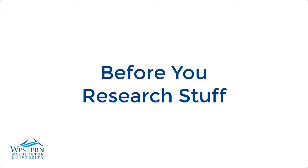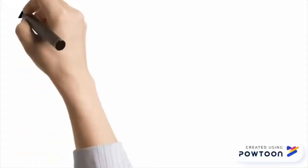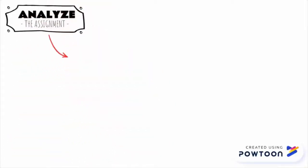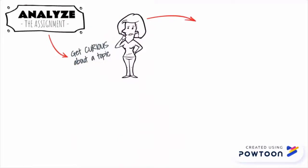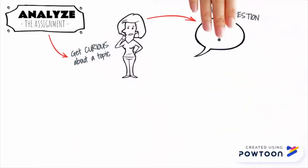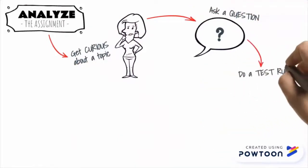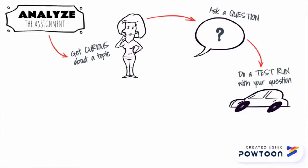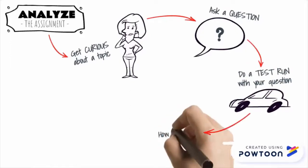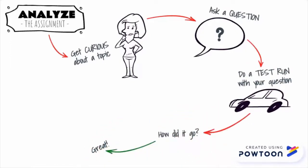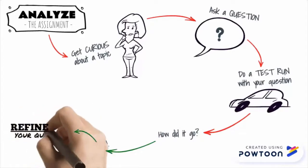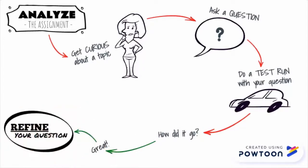The way this looks in the early stages is that you will have analyzed an assignment, got curious about a topic, and asked a question about that topic and did a test run to figure out whether or not the language and terms you're using are working. If it didn't work, you go through that process again. If it did, you went ahead and refined your question. That inquiry question you ended up with had a few characteristics, hopefully.